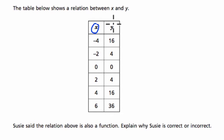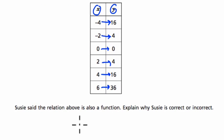Remember, x's are inputs and y's are outputs. So for example, negative 4 goes to 16, it doesn't go anywhere else. Negative 2 goes to 4, 0 goes to 0, 2 goes to 4, 4 goes to 16, and 6 goes to 36. This means,